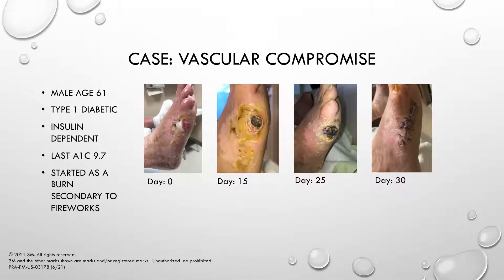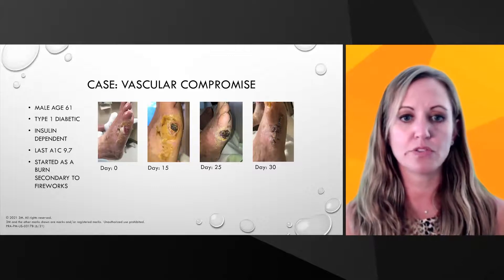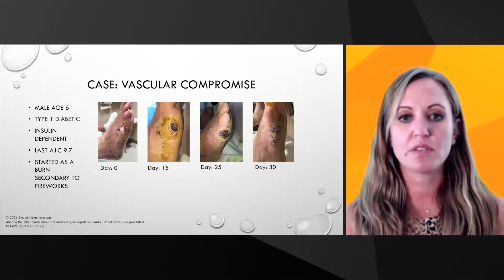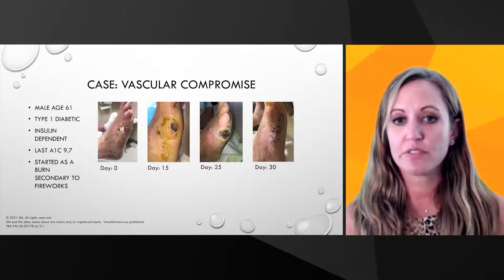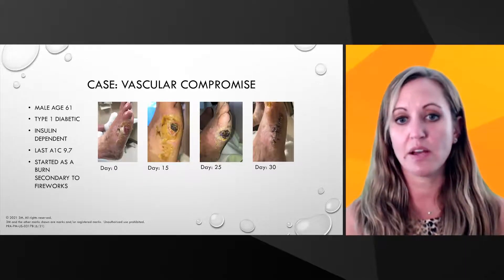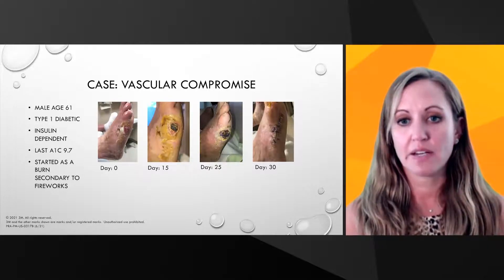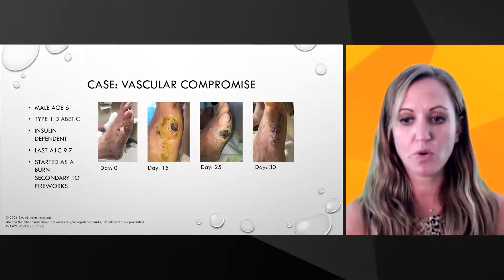Here is a case of a patient who had vascular compromise — a 61-year-old male with type 1 insulin-dependent diabetes and a last A1C of 9.7. The wound started as a burn secondary to fireworks on the 4th of July. On day zero, the ulceration was present. By day 15, it was starting to get ischemic with dried eschar. He was revascularized at that point. On day 25, it was still intact eschar. On day 30, he ended up getting the toe amputated and it did go on to healing.